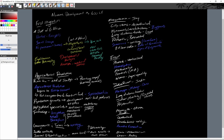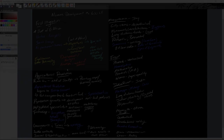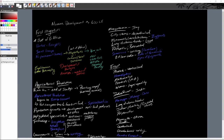Now let's move on to religious systems. The last thing in this very early section is going to be early religions. There are three early religions to cover here.